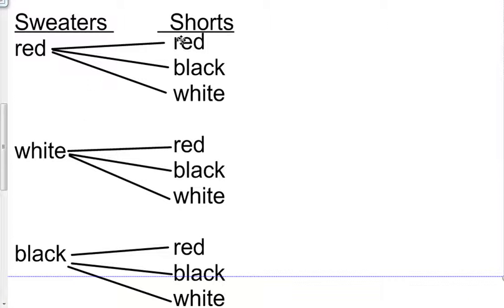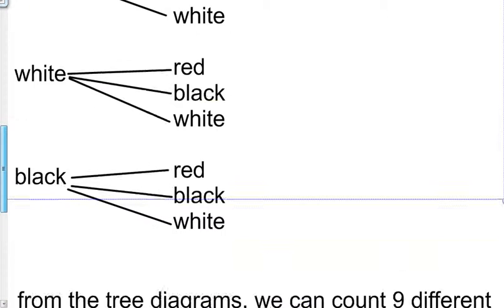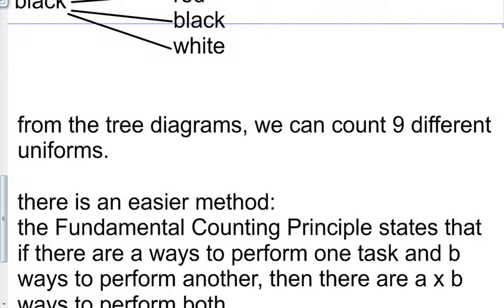So I can count each of these pairs to get 1, 2, 3, 4, 5, 6, 7, 8, 9 possible different uniforms.